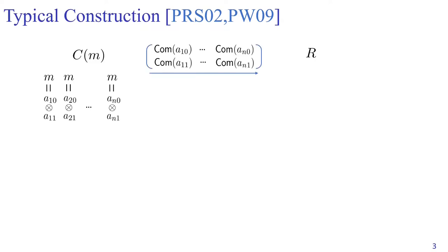Next, the committer commits to these shares independently. The receiver samples a random string of length N and sends the random string C to the committer. The committer commits to its initial commitment according to the receiver's string C.